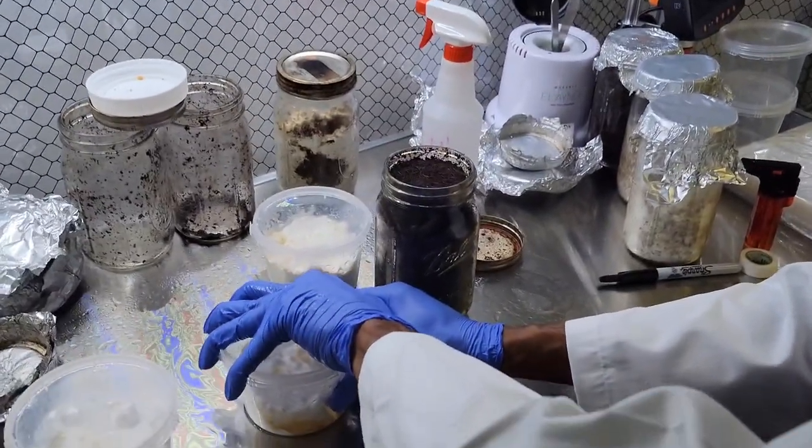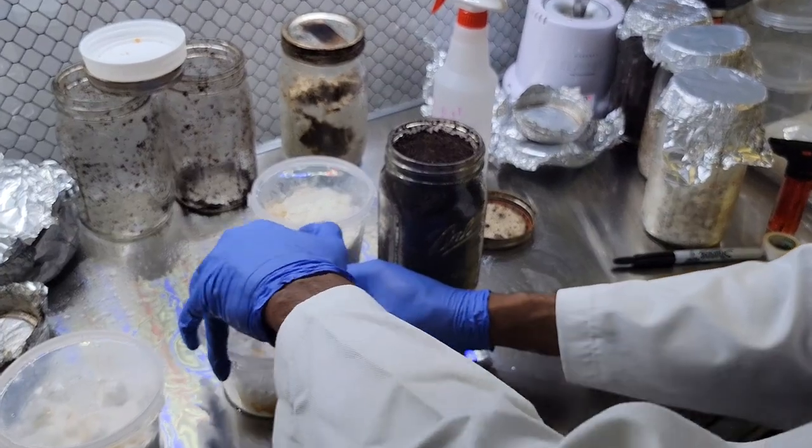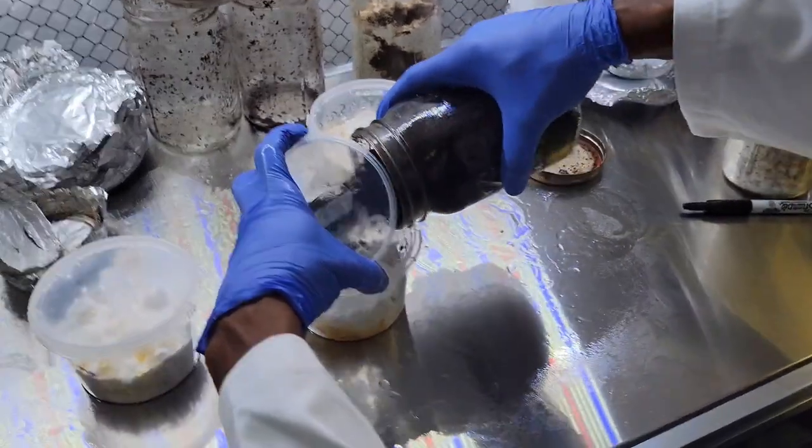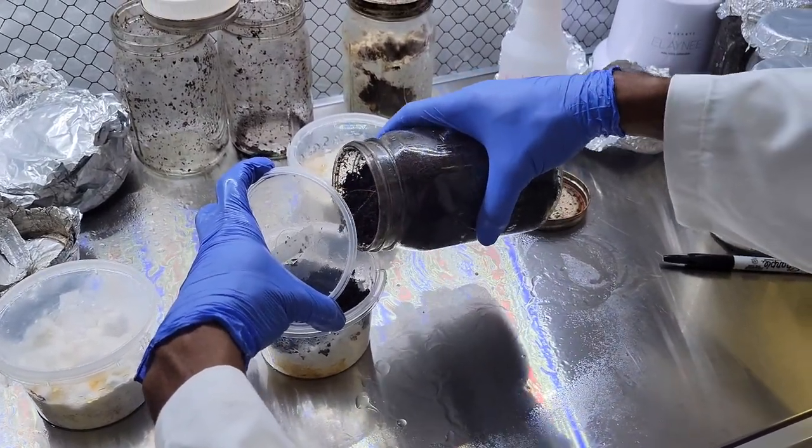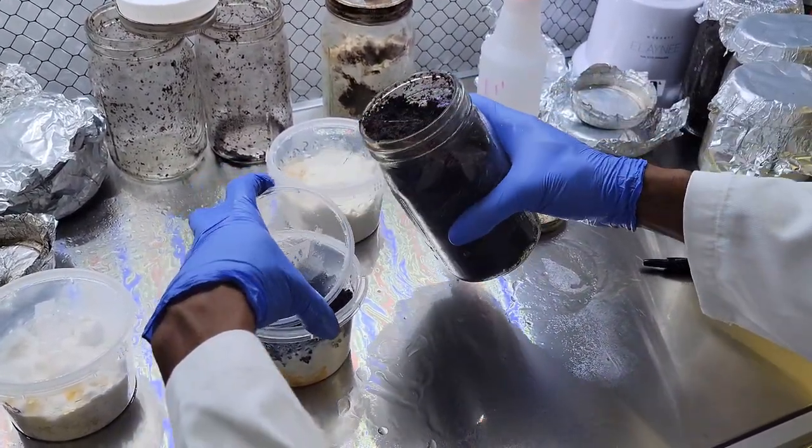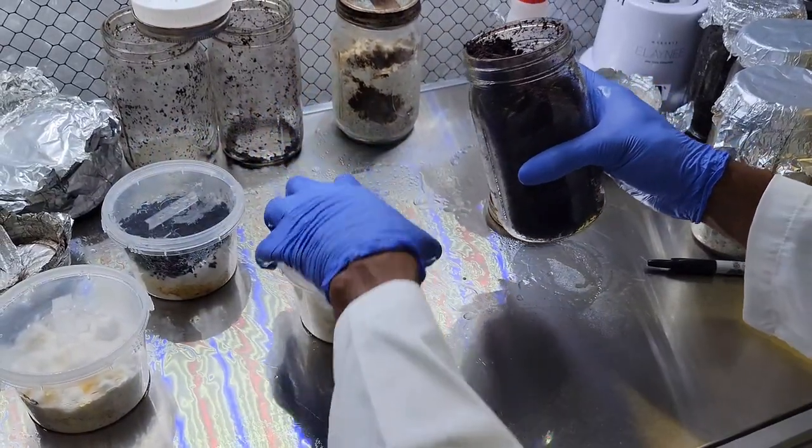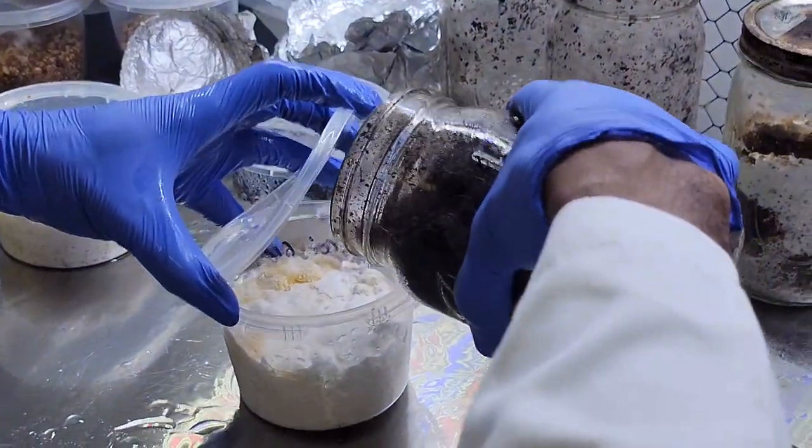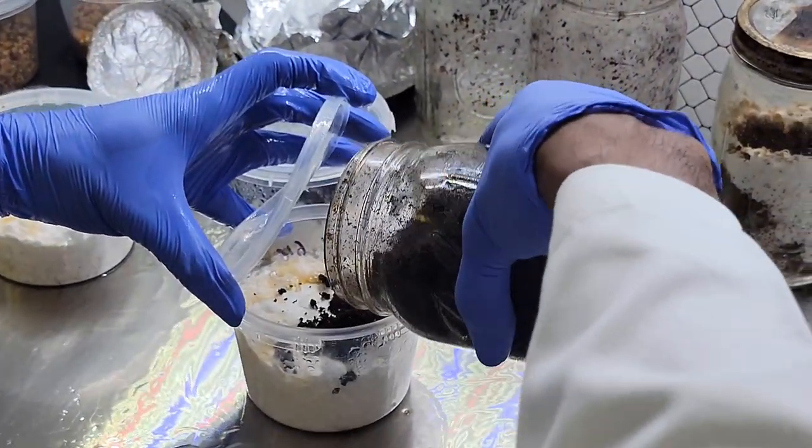What we're gonna do is take some substrate that is low in nutrient and we're going to cover the top of the grain, and then we're just gonna let the mycelium fruit straight up. The reason we're putting this casing layer on top of the grain is because grain is high in nutrient.